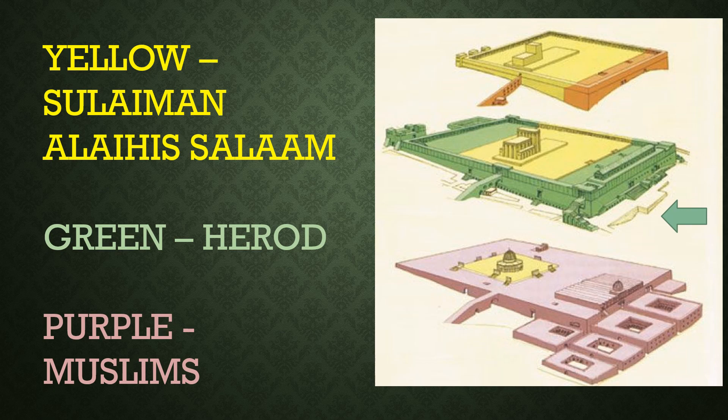The green area which you see on the slide shows where Herod expands it — he adds walls and fills in the area. Nabi Isa would most probably have seen it looking like this. In the year 70 CE, the Romans under Titus destroy the Masjid al-Aqsa compound, and then it was left to the Muslims to restore it, and they added on areas to it as well.